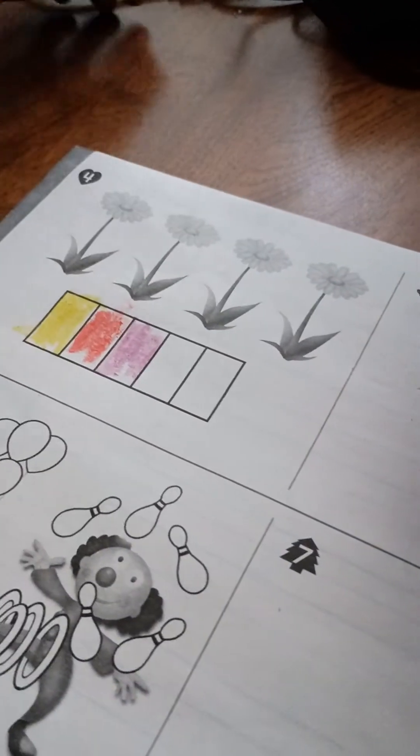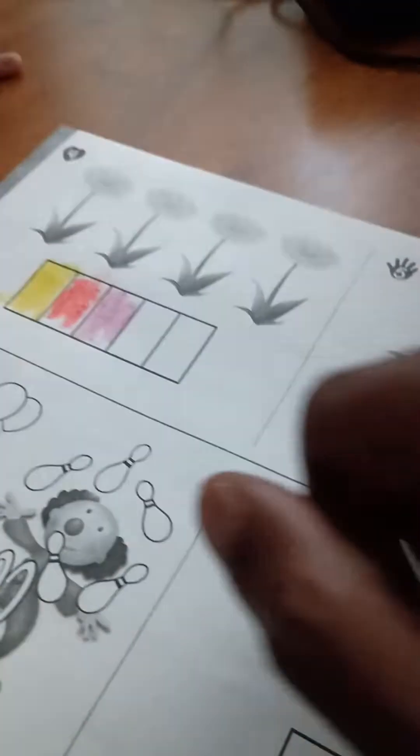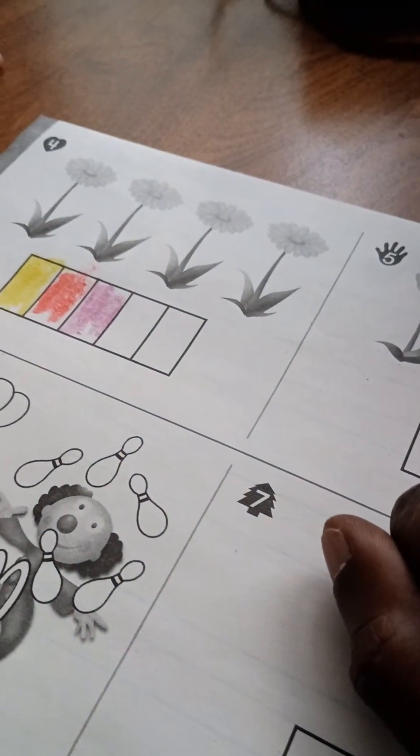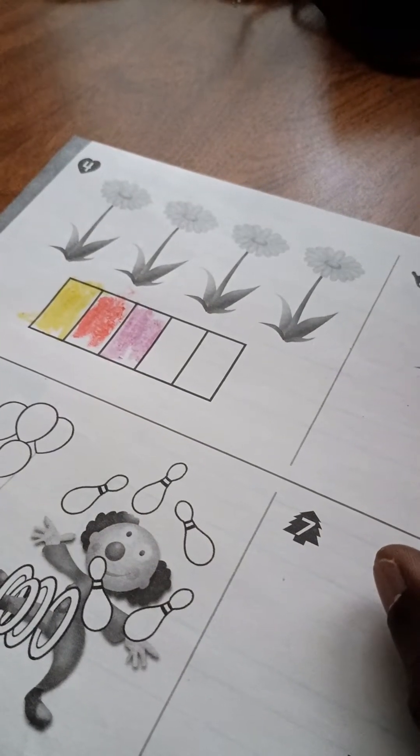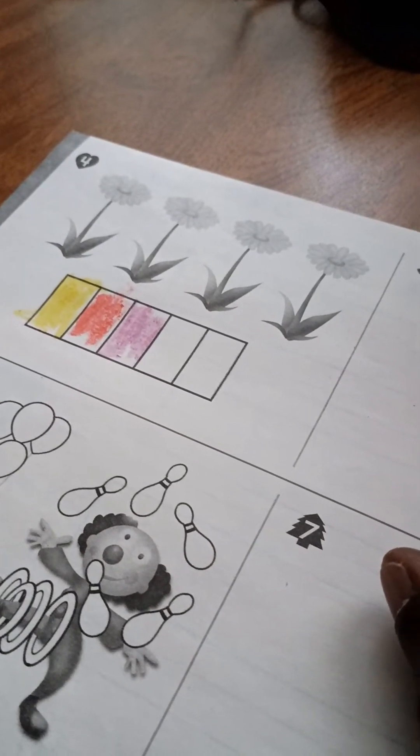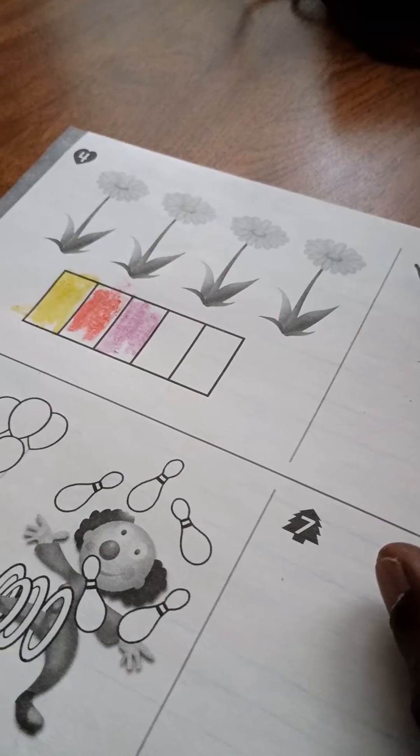How many boxes do you have colored? Four. No. How many you got colored right now? Three. Two. Okay, so you got to color how many more? Two more. One. One.